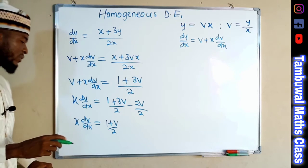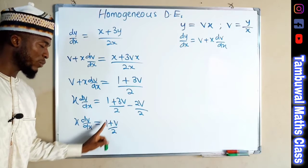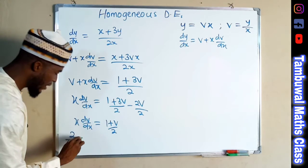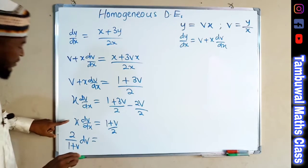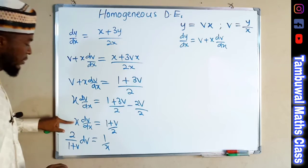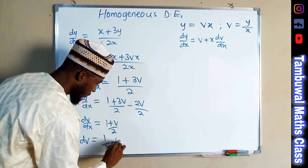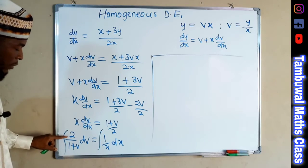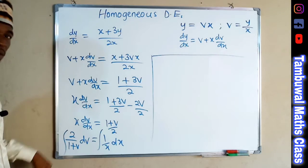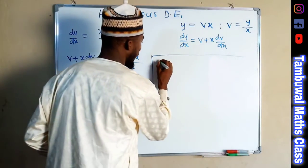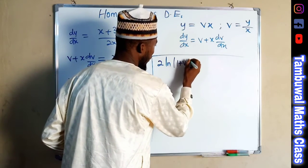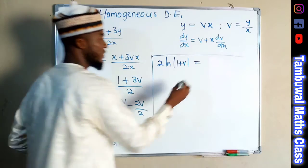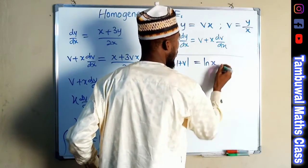We are now free to separate the variables. Multiplying both sides by the reciprocal of (1 plus v) over 2 gives 2 over 1 plus v on the left with dv, and 1 over x dx on the right. Integrating both sides: factoring out 2 on the left and integrating 1 over 1 plus v gives 2 times the natural log of absolute value of 1 plus v. On the right, integrating 1 over x gives natural log of x plus the constant C.